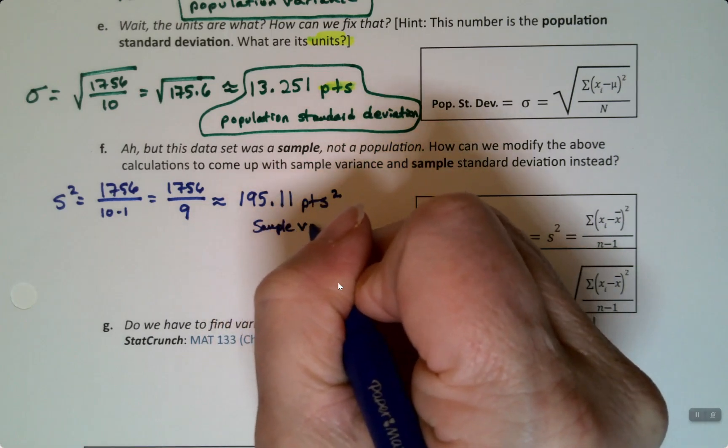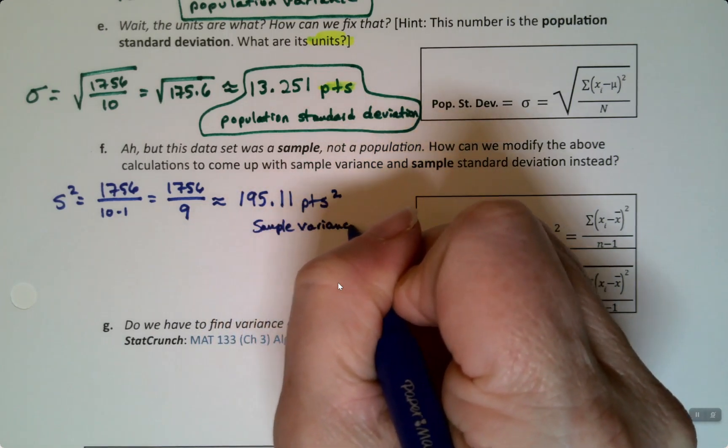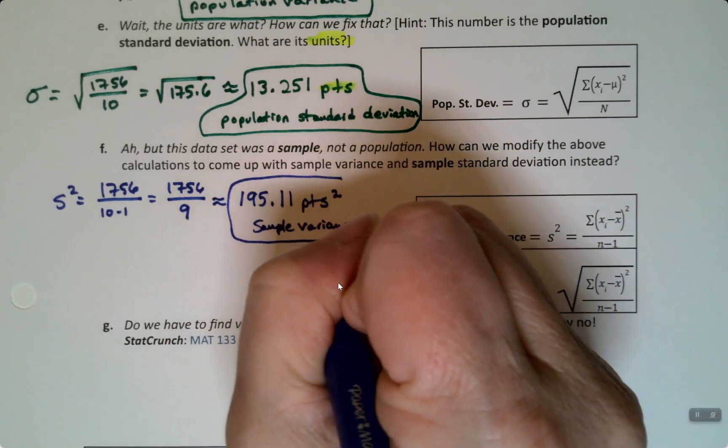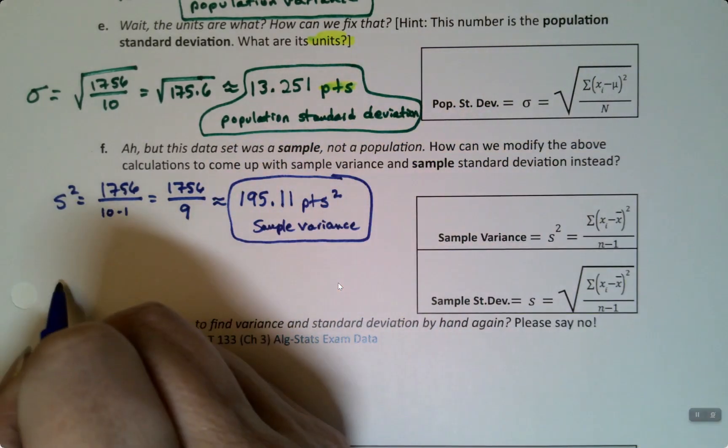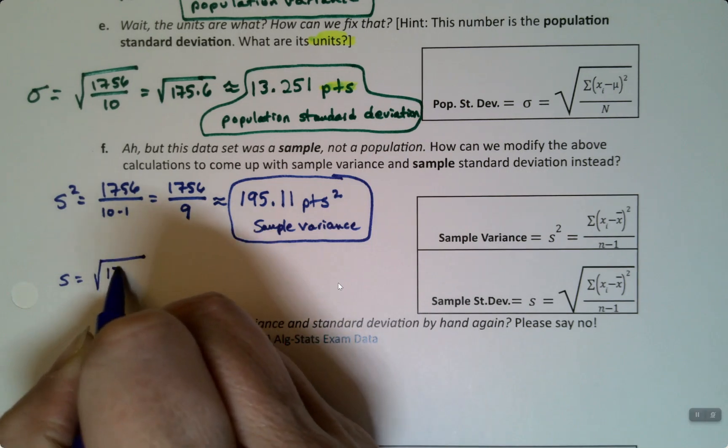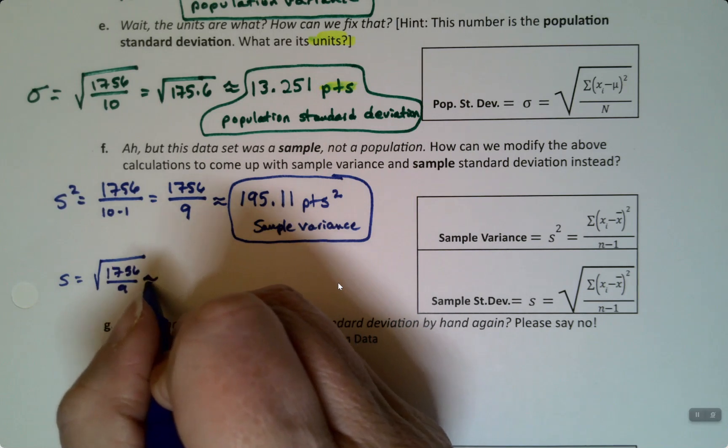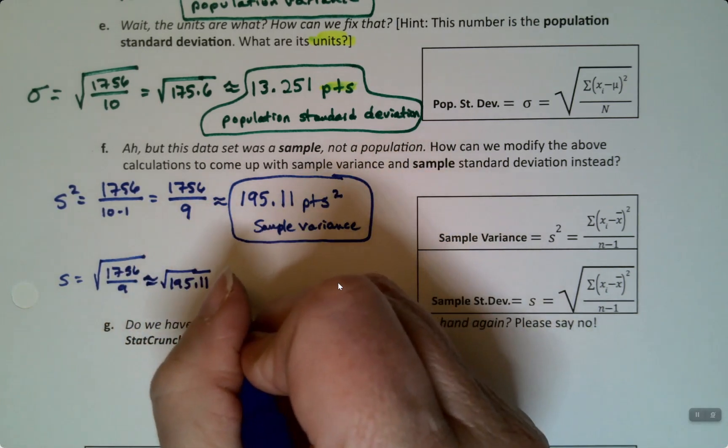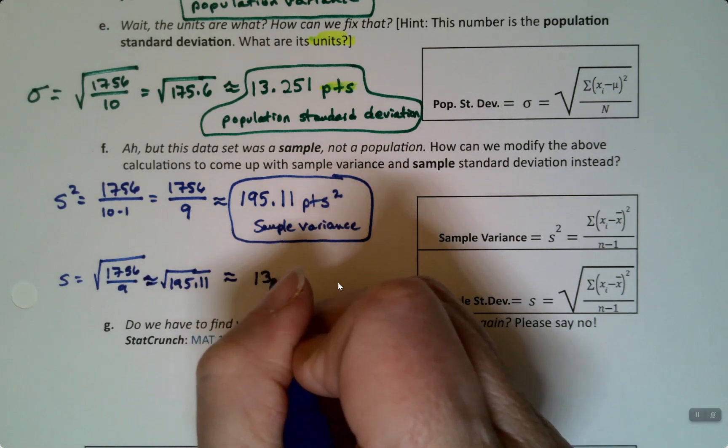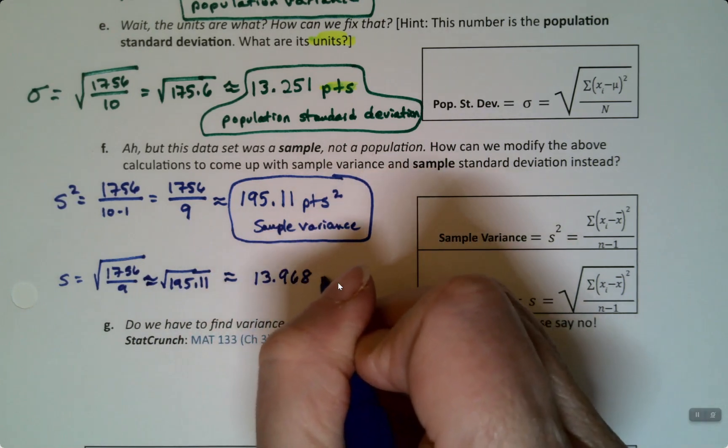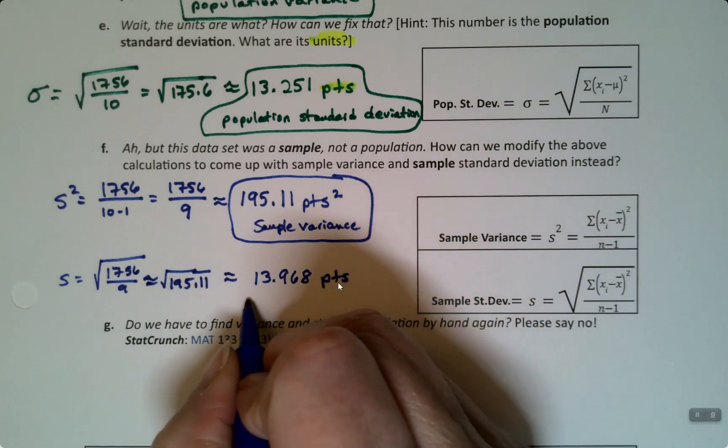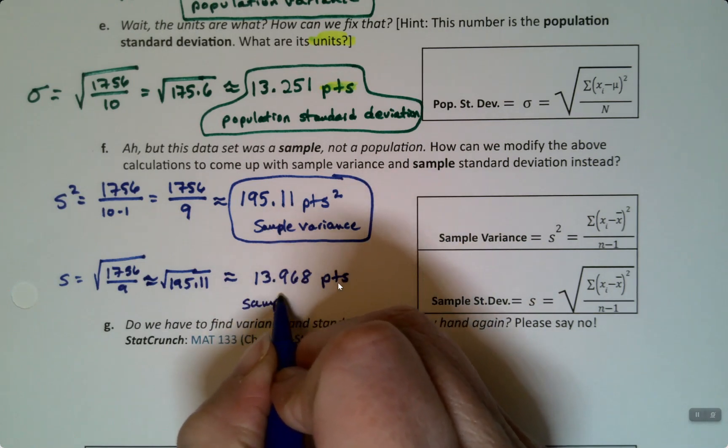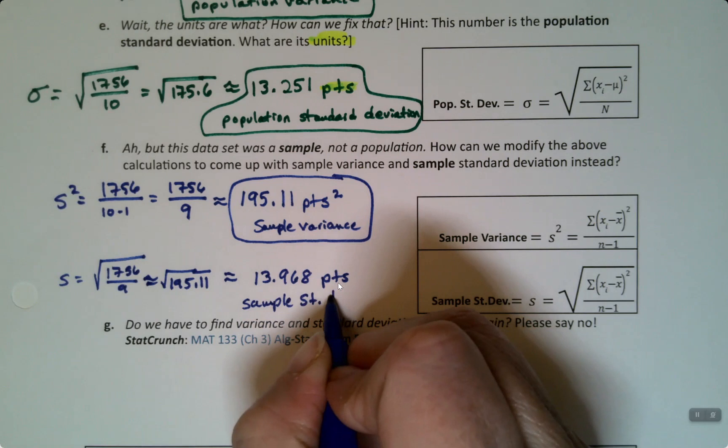Again, it has that weird unit on it. That's the sample variance—it's the variance if your dataset was a sample. And then s is the square root of 1756 over 9, in other words the square root of 195.11, which turned out to be 13.968, and that would have the same unit as our dataset, points. That's the sample standard deviation.